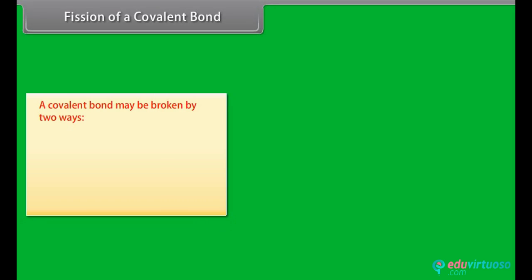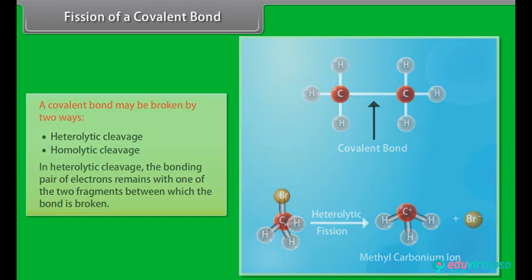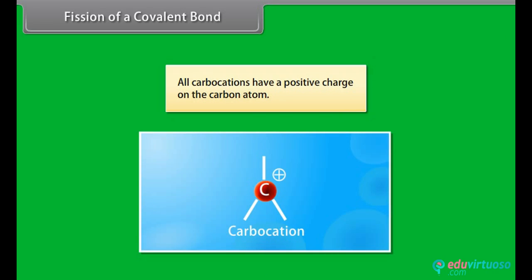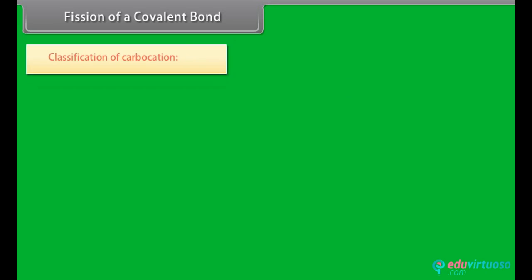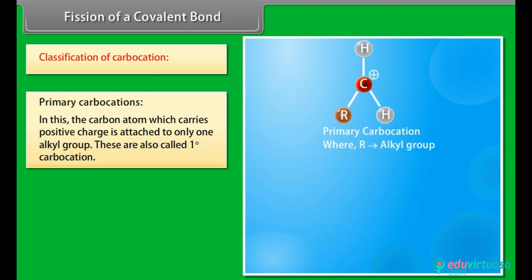A covalent bond may be broken by two ways: heterolytic cleavage and homolytic cleavage. In heterolytic cleavage, the bonding pair of electrons remains with one of the two fragments between which the bond is broken. All carbocations have a positive charge on the carbon atom. In primary carbocations, the carbon atom carrying the positive charge is attached to only one alkyl group.